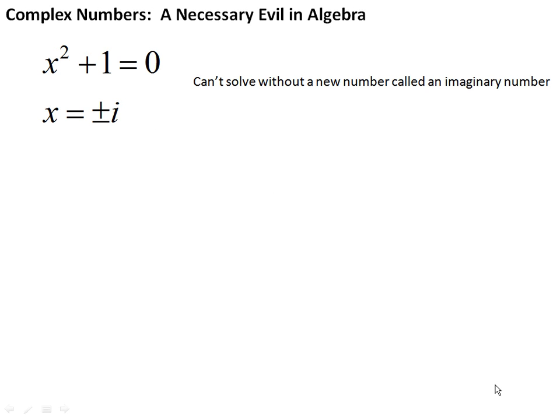Complex numbers are a necessary evil in algebra, and let me explain why. Mathematicians long ago struggled with a really simple algebra problem: x squared plus 1 equals 0. If you rearrange this, you get x squared equals minus 1. We can't square a number and get a negative number, but this equation is so simple it needs a solution.